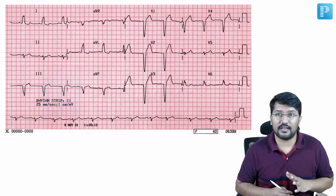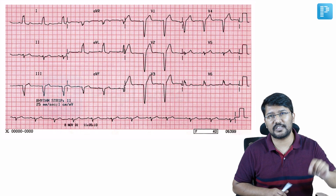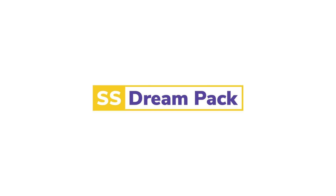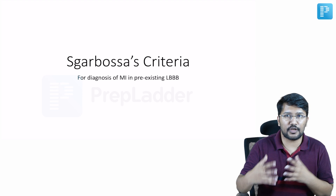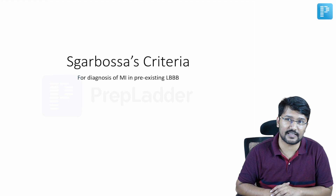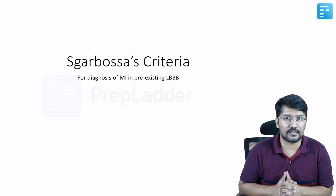What is Sgarbossa's criteria? This is basically the criteria that helps you to diagnose with reasonable specificity MI in patients with pre-existing left bundle branch block. This is Dr. Patil, and I hope your preparation is in the right direction. In continuation with the video series to help catapult your preparation towards your ETSS examination, here is the second video in the series, and today we are going to talk about Sgarbossa's criteria.